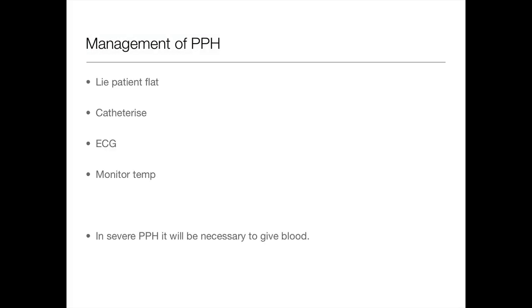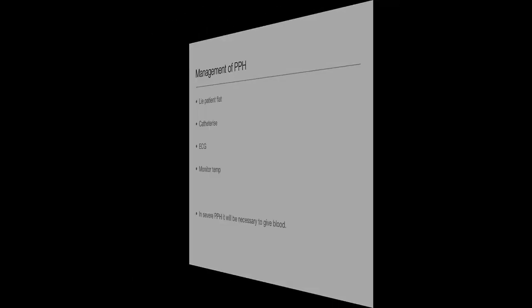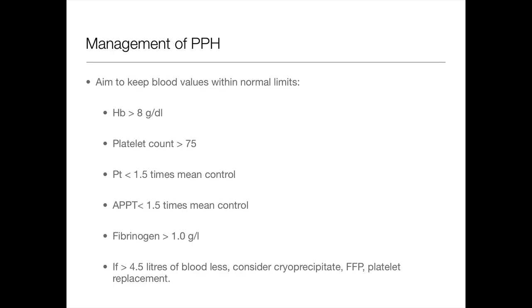And this is just about monitoring, isn't it? So lay patient flat, catheterize so you can see how much urine output is in terms of shock. Get an ECG, monitor the temperature. And if there's very severe postpartum hemorrhage, it will be necessary to give blood. And if you haven't got the cross match back, you can just give O negative. These are just some blood values in terms of the thrombin. This is for the really keen people. You don't need to actually know this, but it's just useful in terms of seeing the normal limits. And you need to keep these things under control.